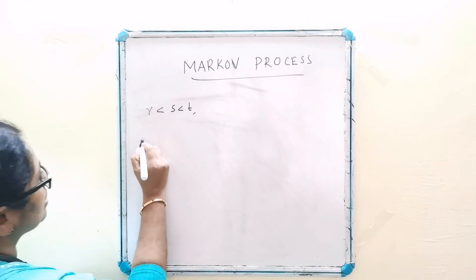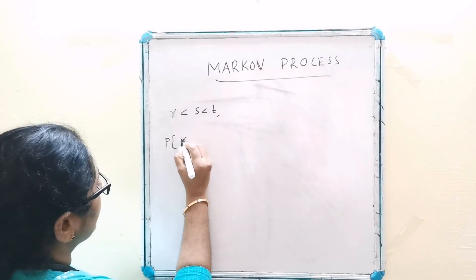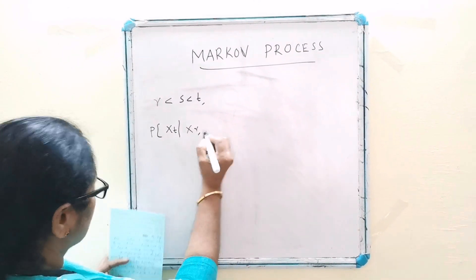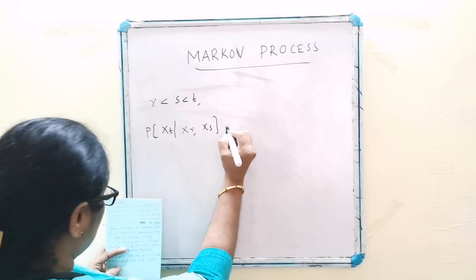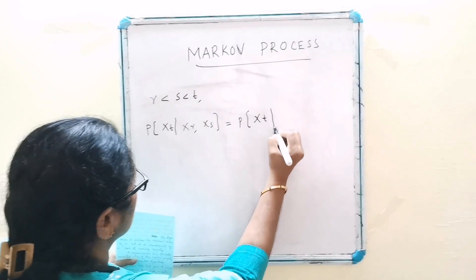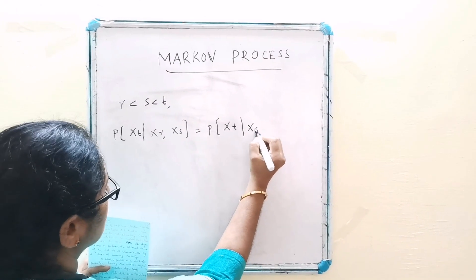That is, probability of xt given xr and xs is equal to probability of xt given xs.